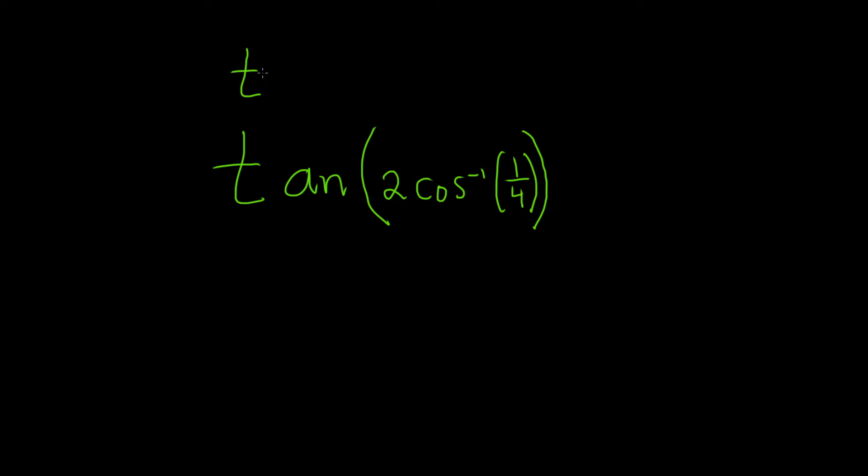So recall if you have the tangent of 2x, this is equal to 2 times the tangent of x, all divided by 1 minus tangent squared of x.